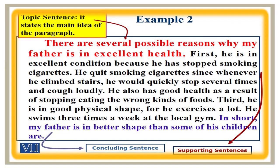There is another example for your understanding. In this particular example, as you can see in the first sentence, it talks about the father being in good health. All the other sentences that come after that are factual evidence about how his father is in better health. So while reading this paragraph, we can see that the first sentence is the topic sentence because it has the main idea, which is about the good health conditions of the father. All the other sentences are actually supporting this point of view by giving evidence.